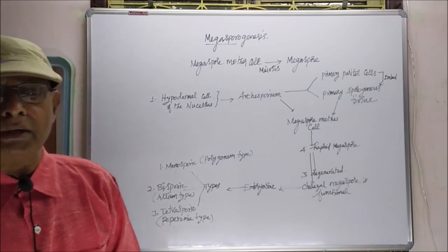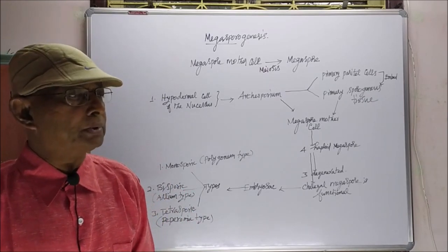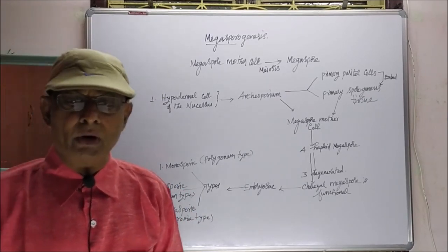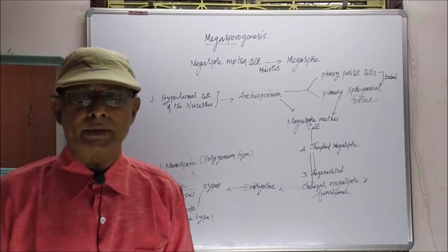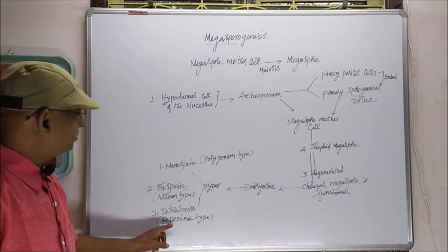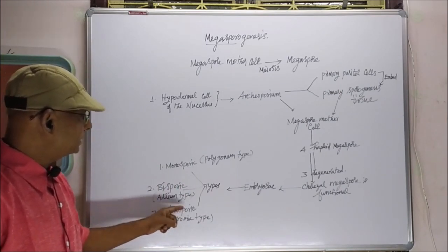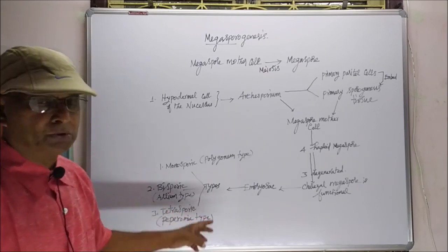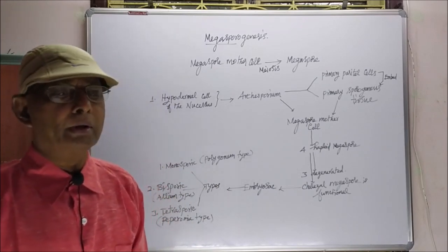The third type is tetrasporic. When all four megaspores are involved in the formation of the embryo sac, it is called the tetrasporic embryo sac. The tetrasporic embryo sac can be seen in the plant Peperomia, so it is otherwise called the Peperomia type of embryo sac. These are the three main types of embryo sac formed in plants.